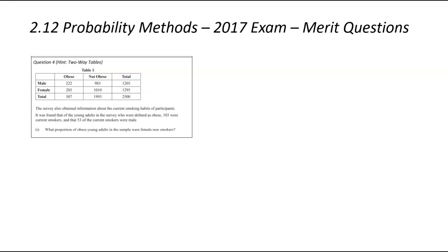Guys, Mr. Bowman here. We're looking at the 2.12 probability methods external. This time around, we're focusing on all those merit questions from the 2017 exam. So question number four from the website. Basically, what proportion of young adults were female non-smokers is what we're looking at.